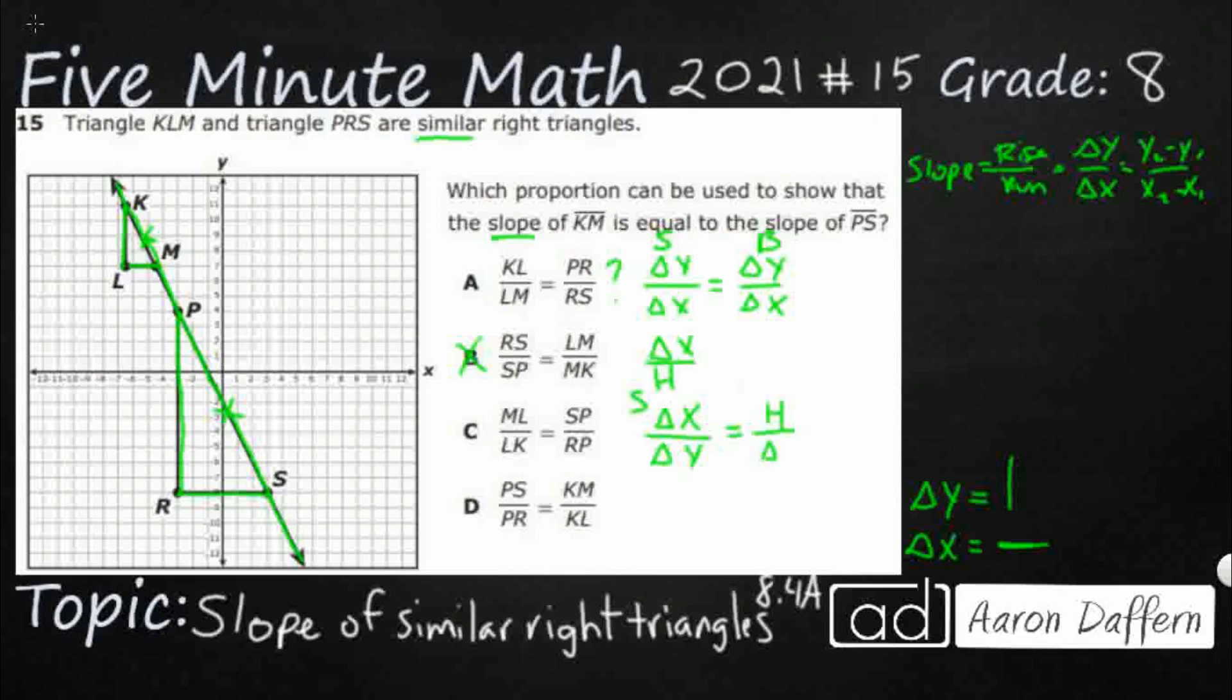So not only does it not work because I need my change in Y to be my numerator. Look, they can't even match these two up. They have the numerator as the change in X in one and then the hypotenuse in the other. And obviously those two would need to match if we wanted to make this a proportion that actually worked. So that's not going to work.